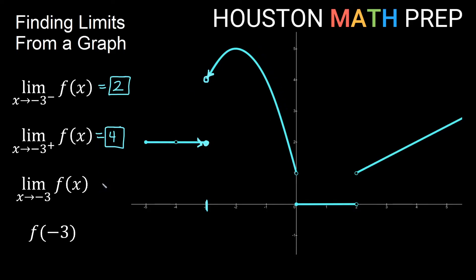Since the left and right limits are not the same, the overall limit does not exist. What is the y value exactly at x equals negative 3? The open dot and the hole are not the defined value, but we have a filled-in closed dot at y equals 2. So f of negative 3 equals positive 2.